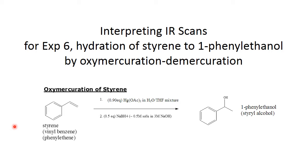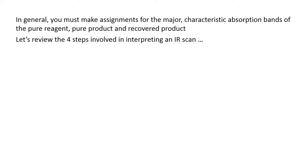Interpreting IR scans for experiment six, the hydration of styrene to one phenyl ethanol by the process of oxymercuration demercuration. In general you must make assignments for the major characteristic absorption bands of the pure reagent, the pure product, and the recovered product.